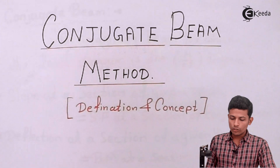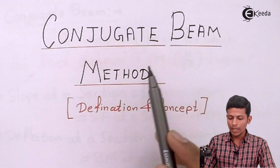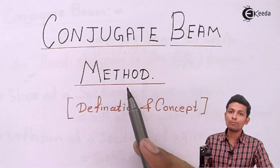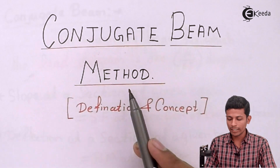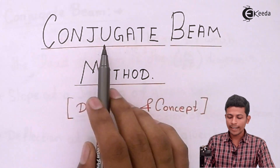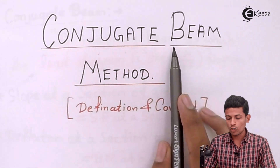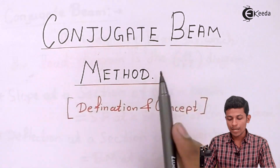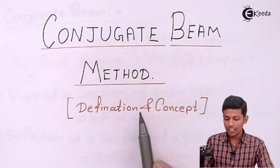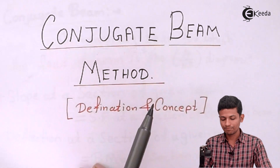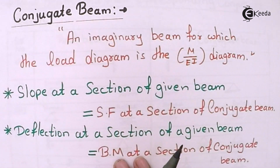The conjugate beam method is one method under 'Deflection of Beam Using Geometrical Methods.' Let's see its definitions and concepts in detail.